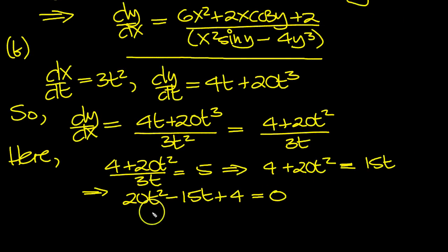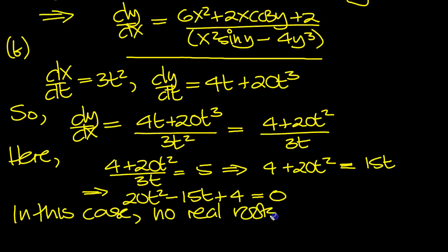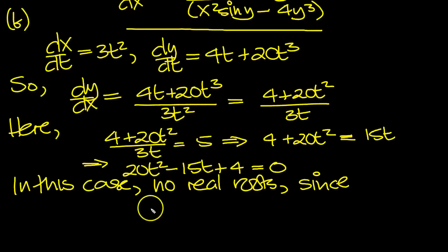So now in this case, we think there's going to be no real roots. There are no real roots since the discriminant will be negative if there's no real roots. So b squared is minus 15 squared needs to be less than, for there to be no real roots.